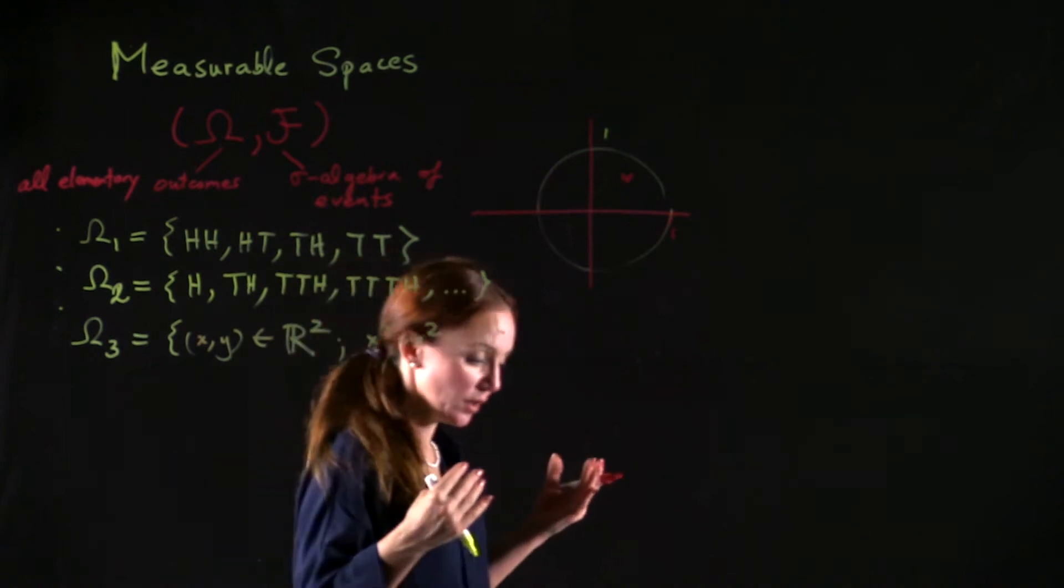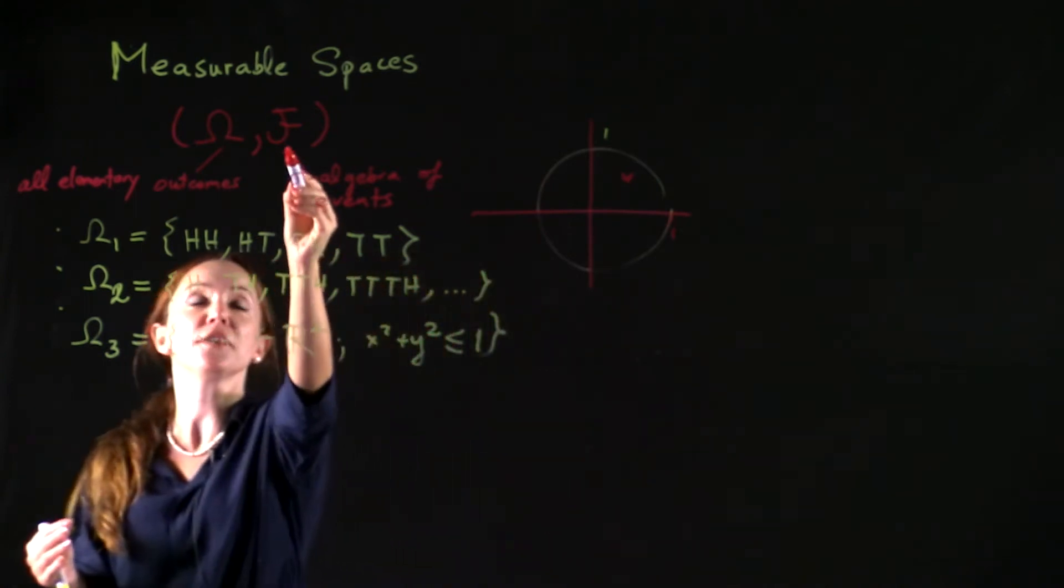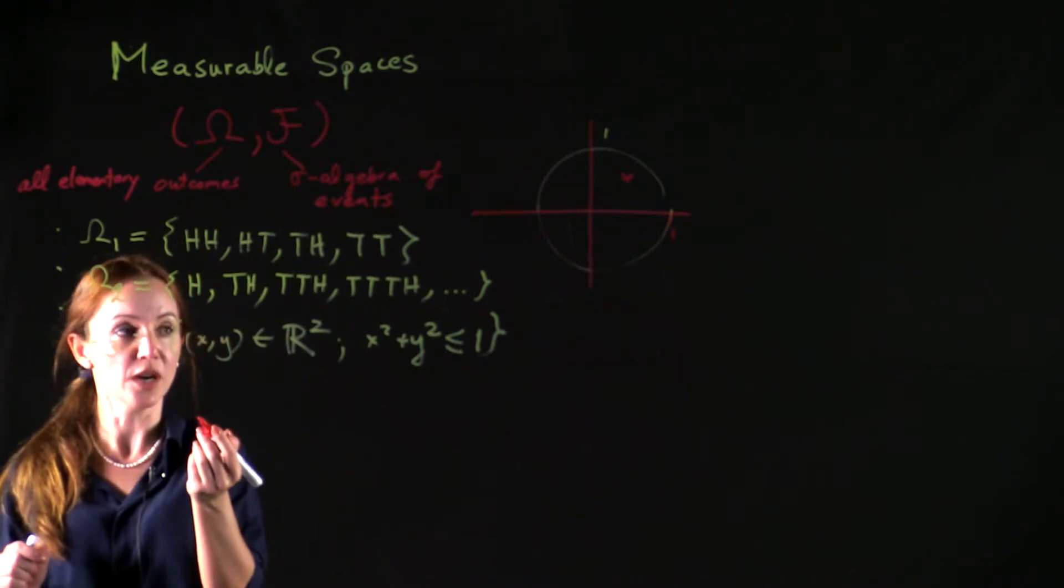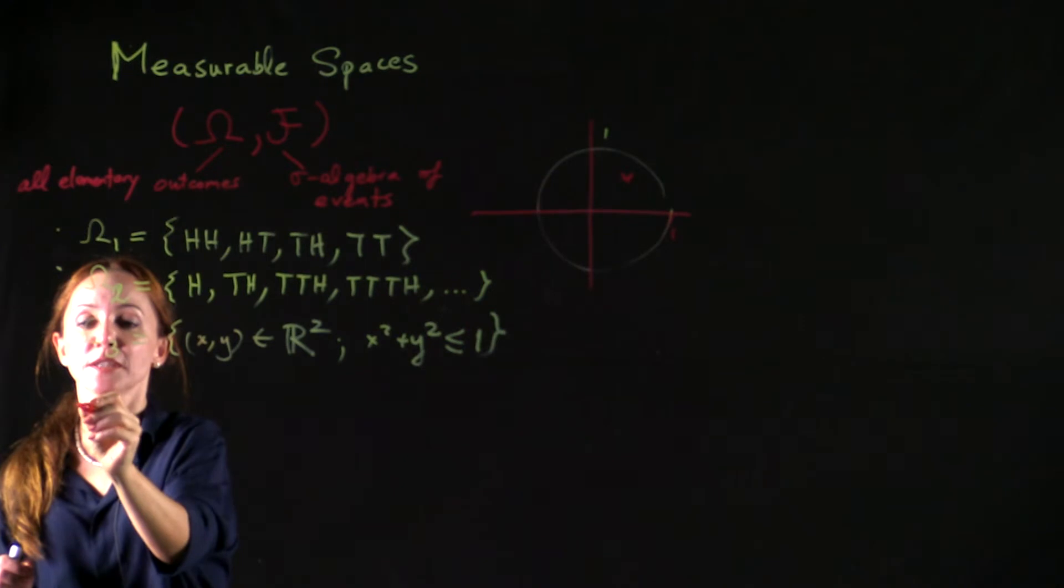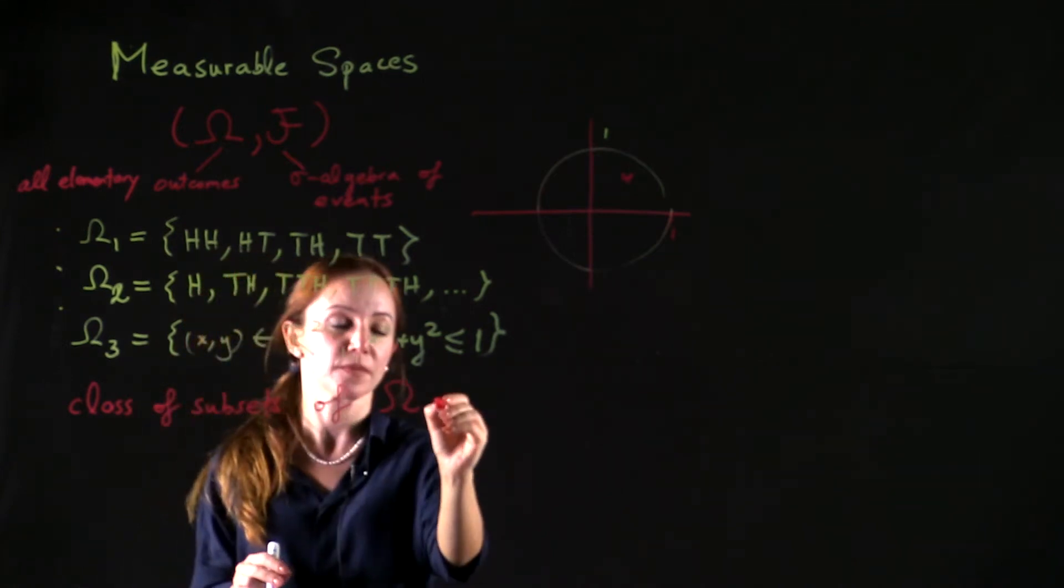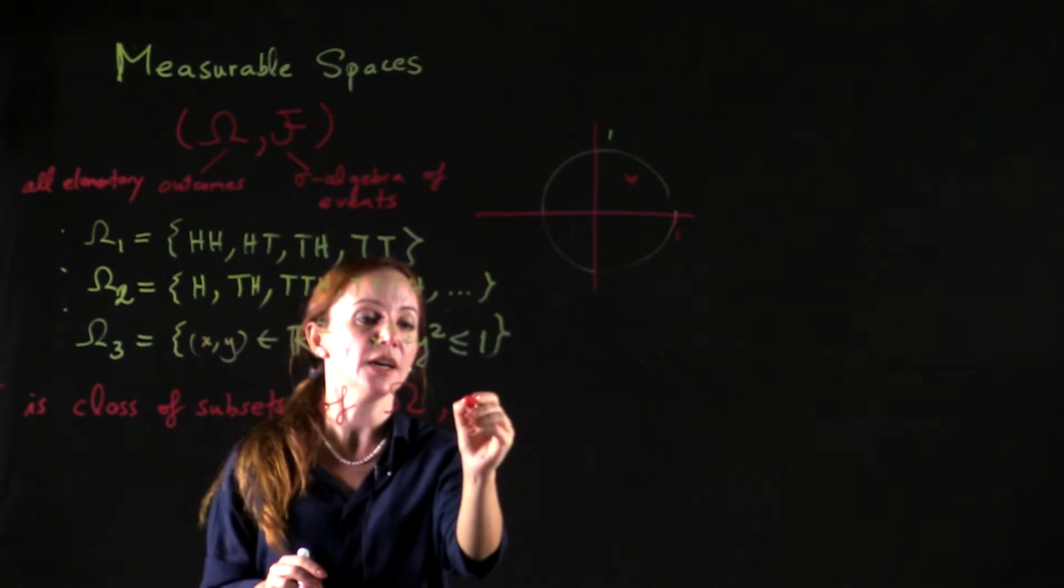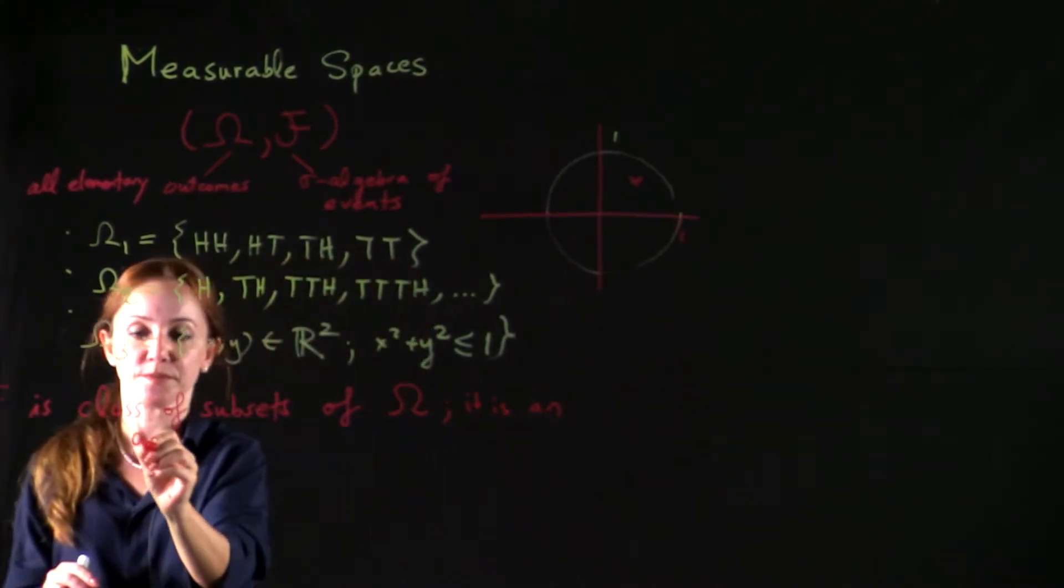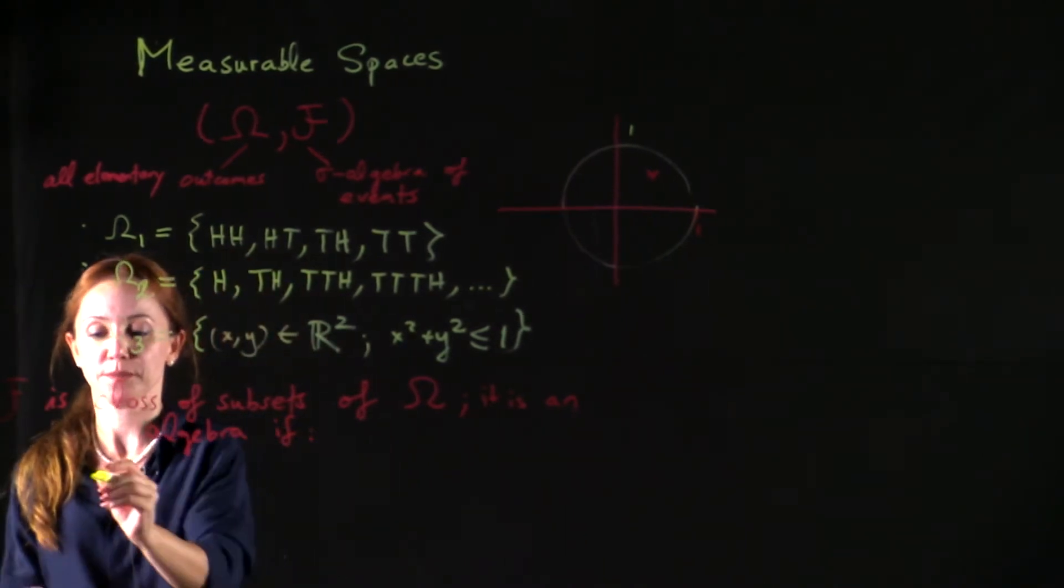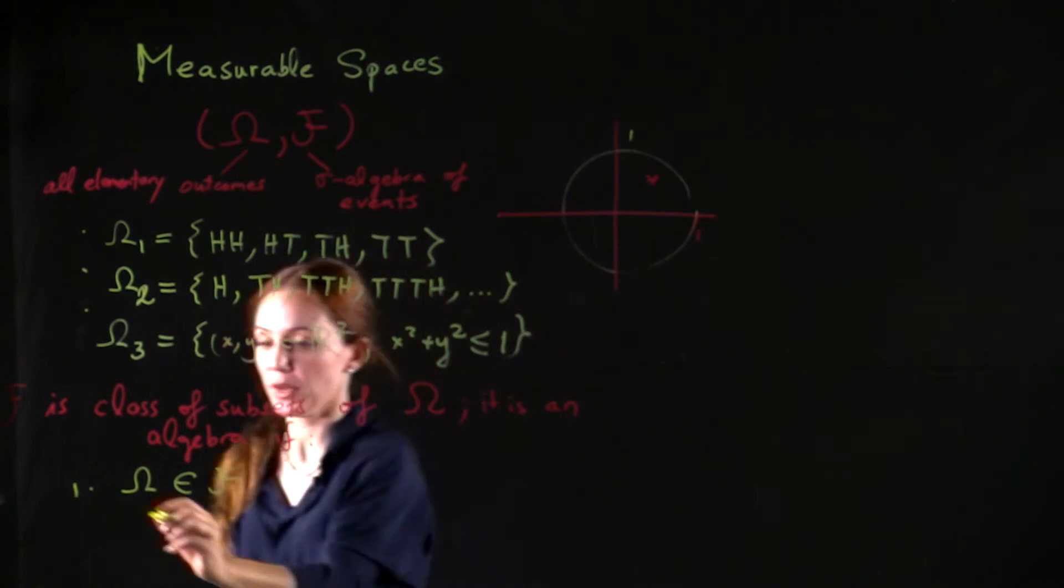In order to measure probabilities of events, we need to first characterize events, and as I said, F will be the set of all events. Now, F is going to be an algebra. An algebra F is a class of subsets of omega.